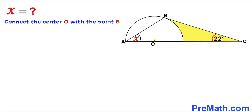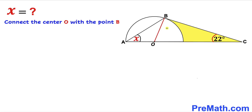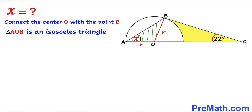Let's connect center O with point B. Now we can see that OB is the radius of this semicircle — let's represent this by lowercase r. And OA is the radius of this very same semicircle, so we call that lowercase r as well. Therefore we conclude that triangle AOB is an isosceles triangle since both side lengths are equal.